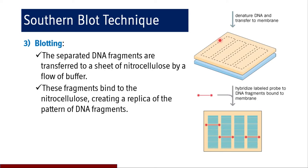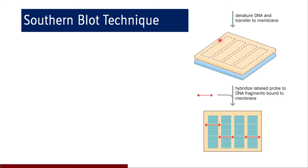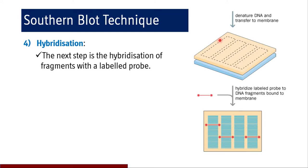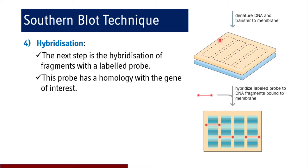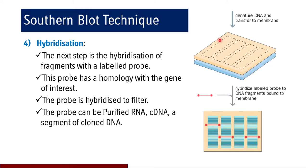The fragments bind to the nitrocellulose, creating a replica of the pattern of DNA fragments seen in electrophoresis. Then comes hybridization: a labeled probe that has homology — complementarity — with the gene of interest is hybridized to the filter. The probe can be purified RNA, complementary DNA, or a segment of cloned DNA. It will find its complementary sequence and hybridize, and whether it is a fluorescent or radioactive probe, you can detect the presence of the particular sequence of interest — DNA, RNA, or amino acid sequence in proteins.